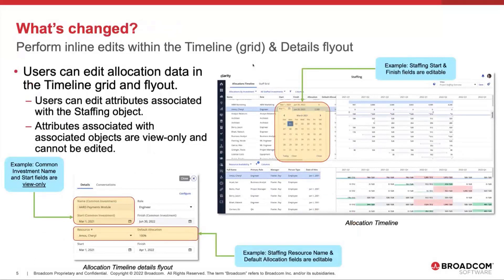So what's changed? With respect to the allocations timeline in the staffing workspace, users can now edit allocation data right there in the timeline grid — to the left of the timelines — and in the associated flyout. Attribute editing is limited to those items associated with the staffing object. Attributes associated with other objects are going to be view-only and cannot be edited.